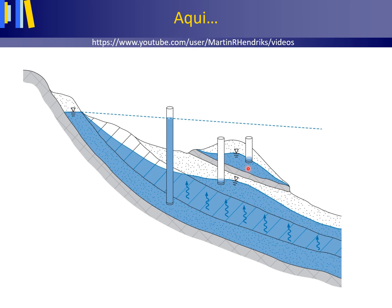Note that the hydraulic head is highest in the semi-confined aquifer, which means that there is seepage — groundwater flowing upwards from the confined aquifer through the aquitard that separates both aquifers.